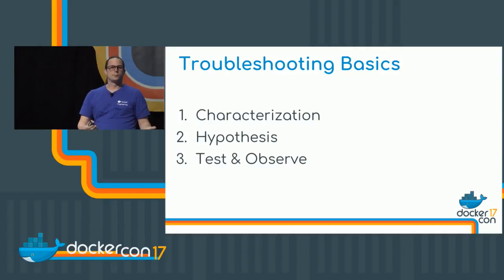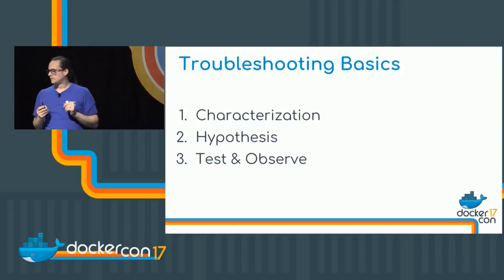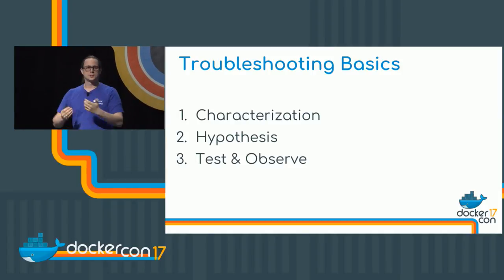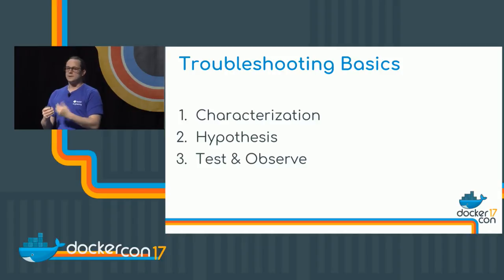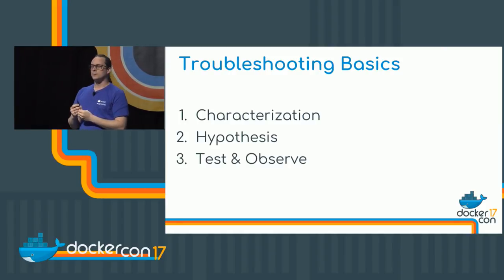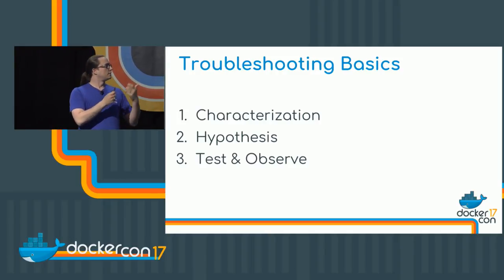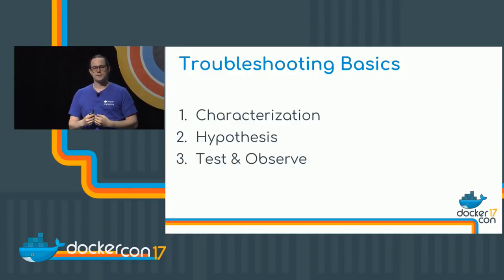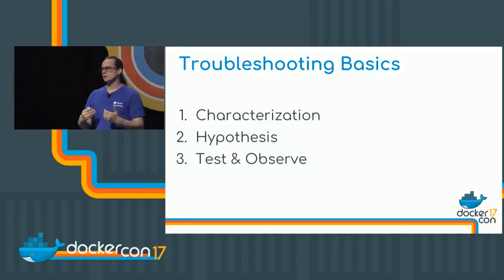Troubleshooting basics. When you run into one of these unexpected situations, I break it down into three steps. The first two are kind of a read-only operation. First, you need to characterize the problem — you can't just start rebooting servers, you have to understand what's going on and be able to describe it. Once you've adequately characterized the problem, you should be able to form a testable hypothesis directly related to that characterization. The last step is when you start making changes: you try it and see how that affects your understanding of the issue.